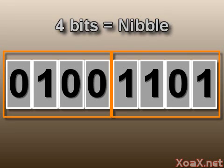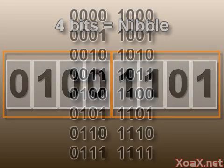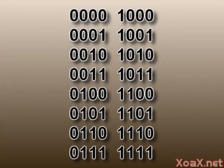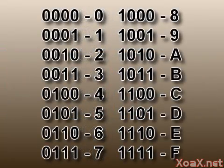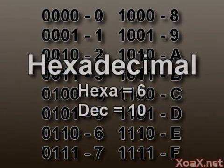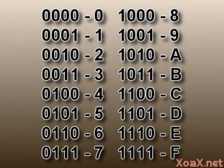A nibble, or 4 bits, can take 16 distinct configurations. Each of these 16 configurations can be represented by a single digit character. Since there are 16 possibilities for each digit, this representation is called hexadecimal.